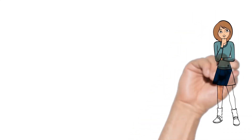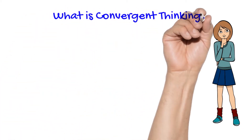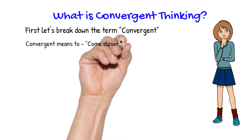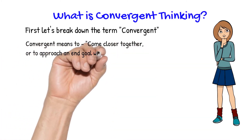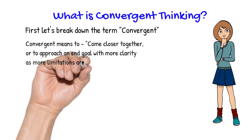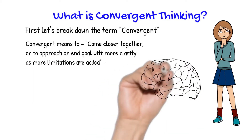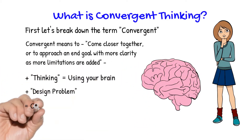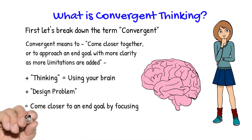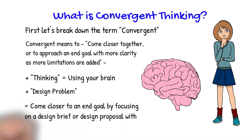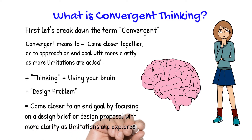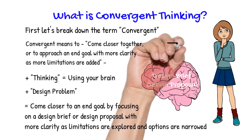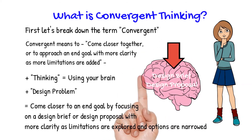In this video we are going to explore some convergent thinking strategies. Convergent means to come closer together, to approach an end goal with more clarity as more limitations are added. If we add thinking — using your brain — and a design problem, we could say that convergent thinking is coming closer to an end goal by focusing on a design brief or design proposal with more clarity.